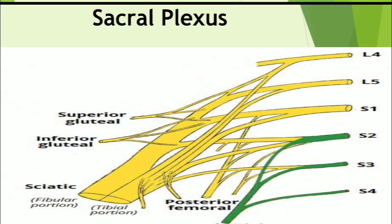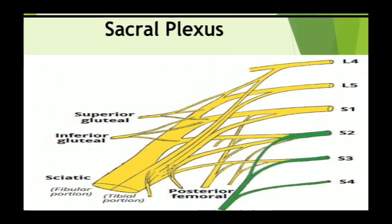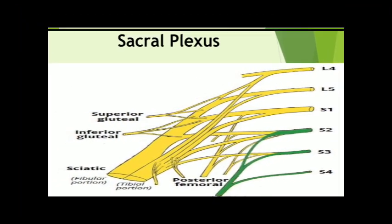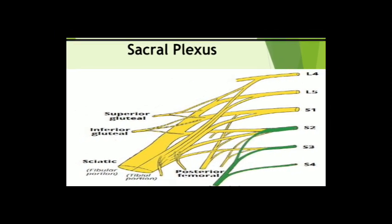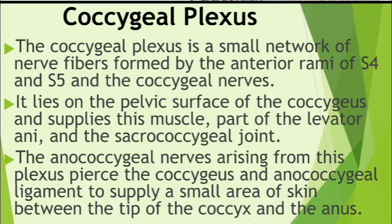We mention the obturator nerve because it passes through the pelvis, though it does not supply any pelvic structure. During childbirth, the fetal head may compress the nerves of the mother's sacral plexus, producing pain in the lower limbs. The obturator nerve is vulnerable to injury during surgery — for example, during removal of cancerous lymph nodes from the lateral pelvic wall. Injury causes painful spasms of the adductor muscles of the thigh and sensory deficits in the medial thigh region.